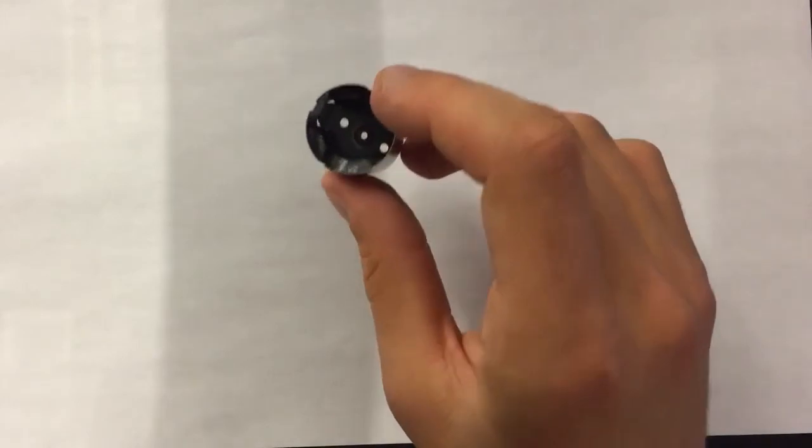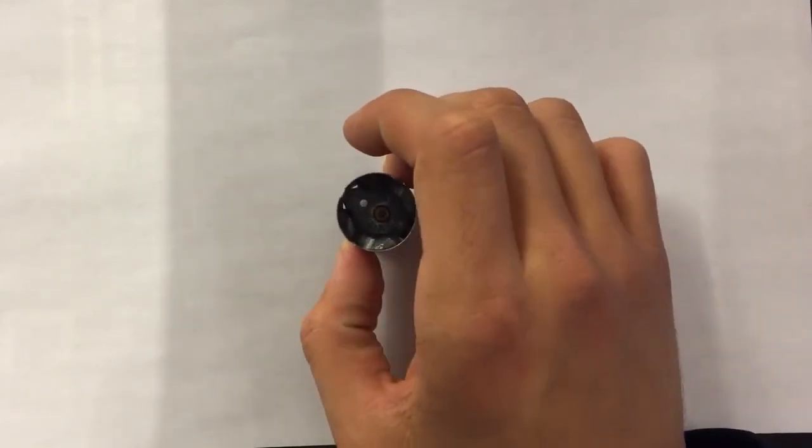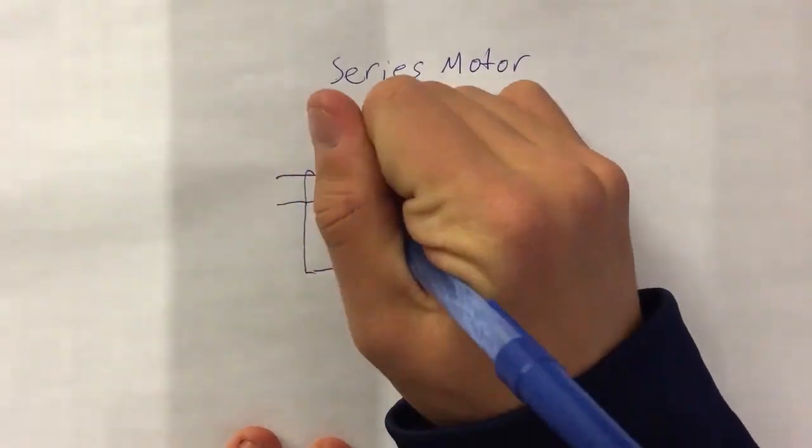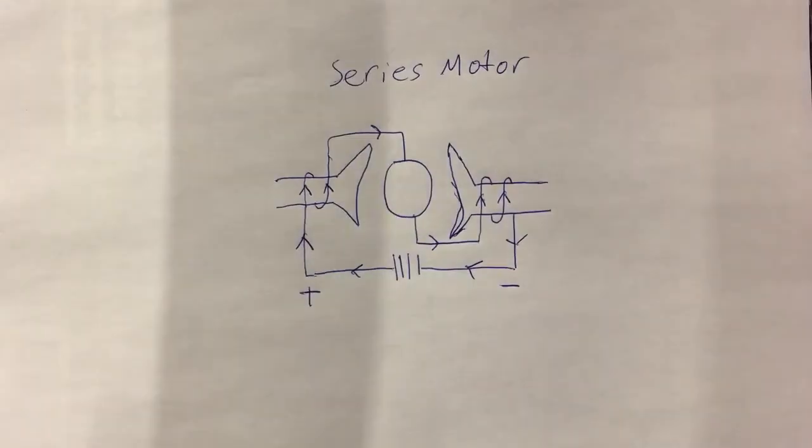Another way to improve our motor would be to use an electromagnet instead of the permanent magnet that our motor uses. A series motor has the field coils connected in series to the power source. This means that there is only one path from the power source that flows through the entire circuit.